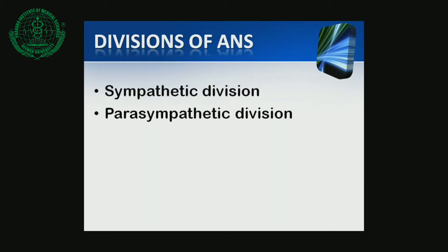The Autonomic Nervous System is divided into two divisions. One is called the Sympathetic Division, and the second is called the Parasympathetic Division.